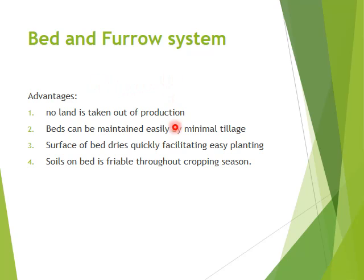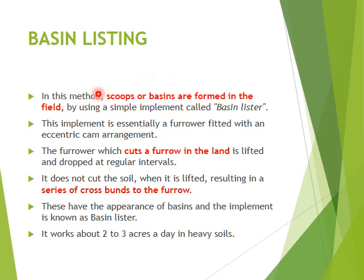Some advantages of the bed and furrow system: no land is taken out of production; beds can be maintained easily by minimal tillage; the surface of the bed dries quickly, facilitating easy planting; and the soil on the bed is friable throughout the cropping season.